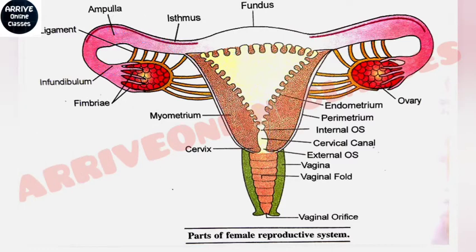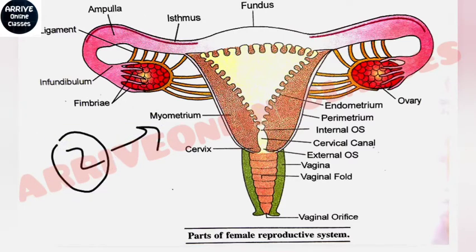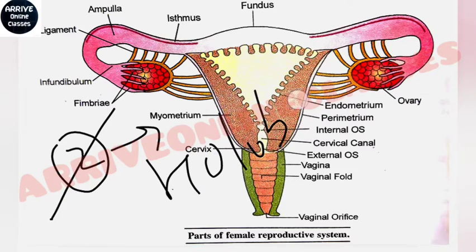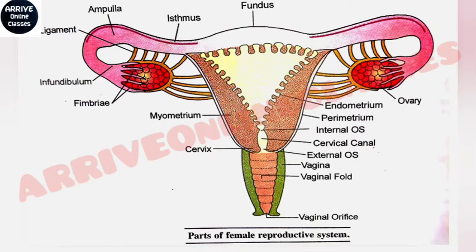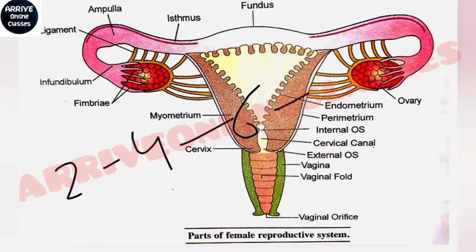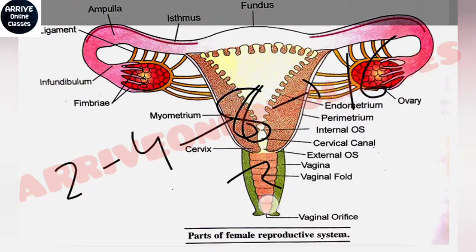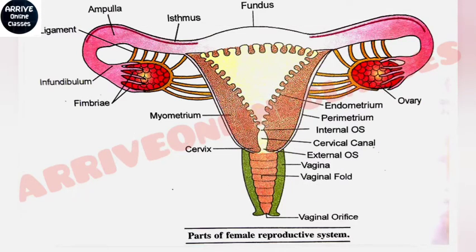After fertilization, the zygote undergoes cleavage, which means it divides. The cleavage is holoblastic, meaning the whole zygote is divided. Then the cell stage is divided into four to six cells. This division process is called cleavage.